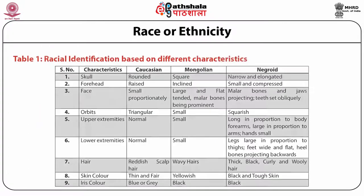The primary races — Caucasoid, Mongoloid and Negroid — can be recognized from certain differences in skull, forehead, face, and orbit, which is the cavity or socket of the skull in which the eye and its appendages are situated. Other characteristics used for racial identification include upper extremities, lower extremities, hair, skin color and iris color.